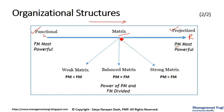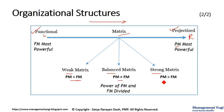In between, we have matrix organization, which has three types: weak matrix, balanced matrix, and strong matrix. In a weak matrix, the project manager's power and authority is less than the functional manager. In a balanced matrix, the project manager's power and authority is equalized with the functional manager. And in a strong matrix, the project manager has more power than the functional manager.